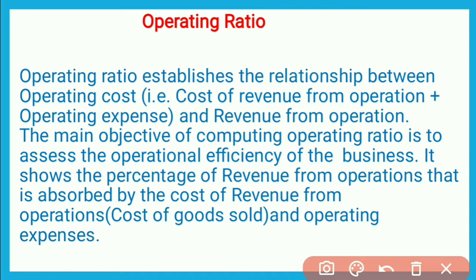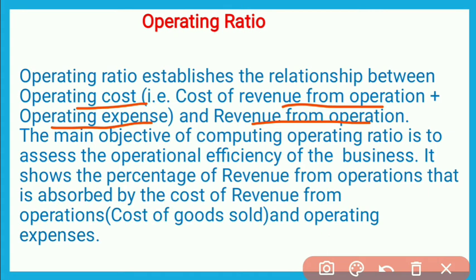Operating Ratio establishes the relationship between operating cost — that is, cost of revenue from operations plus operating expenses — and revenue from operations. Operating cost में cost of revenue from operations और operating expenses को एक साथ लेते हैं, तो यह operating cost होता है।